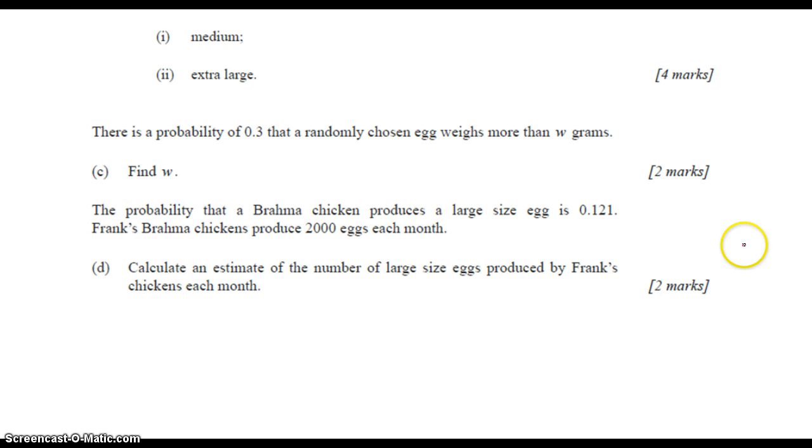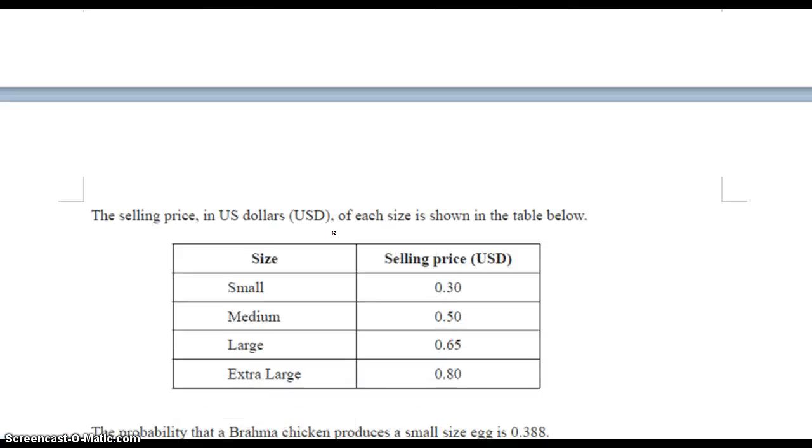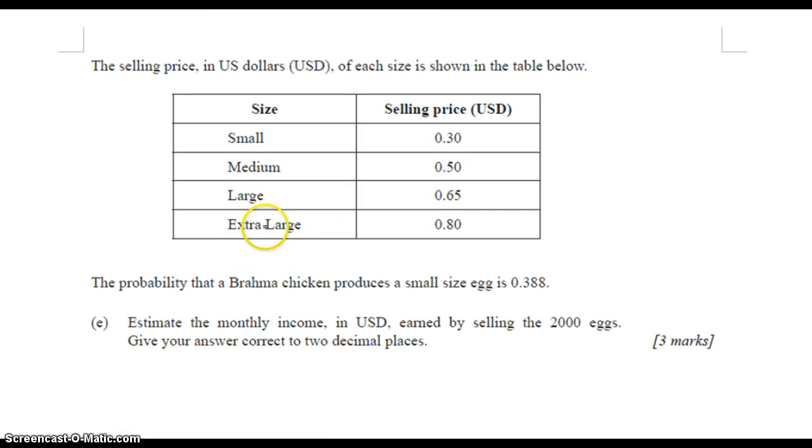And of course, this next problem—we have the probability that it produces a large egg is 0.121, produces 2,000 eggs per month. With the number of large eggs produced, just multiply this times this. No big deal. And then finally, given this information and given the probability given here, estimate the monthly income earned by selling those 2,000 eggs. And you also always want to follow directions in terms of how.